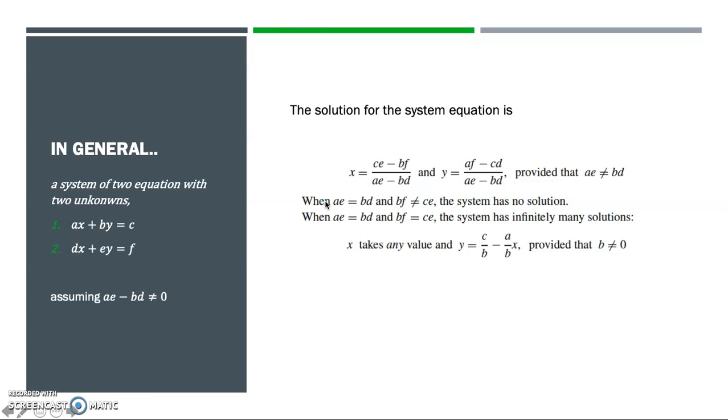And we have a condition when AE minus BD and BF is not equal to CE, then the system has no solution. And if AE equals BD but BF equals CE, then the system has infinitely many solutions.